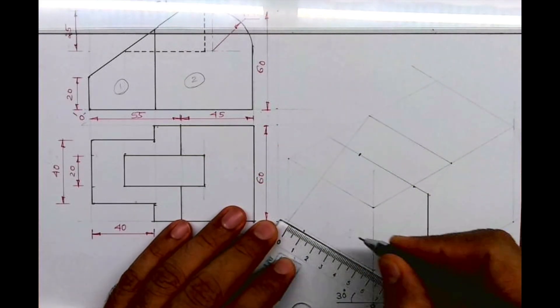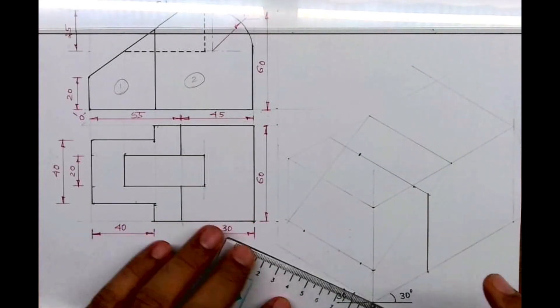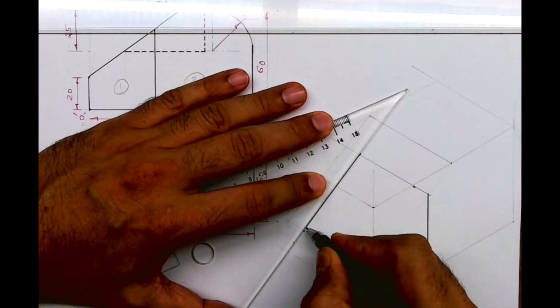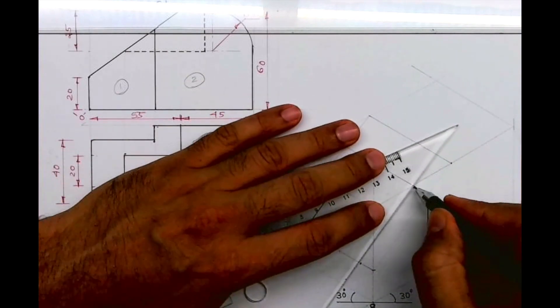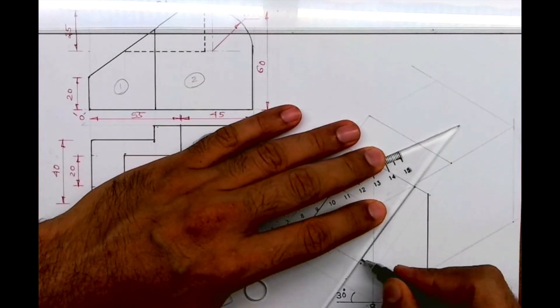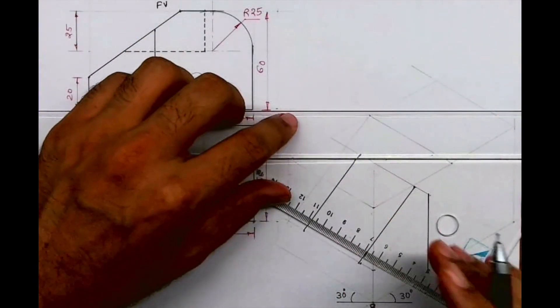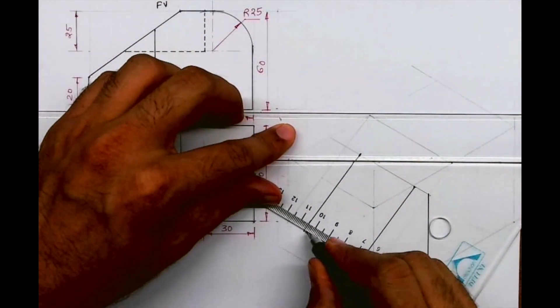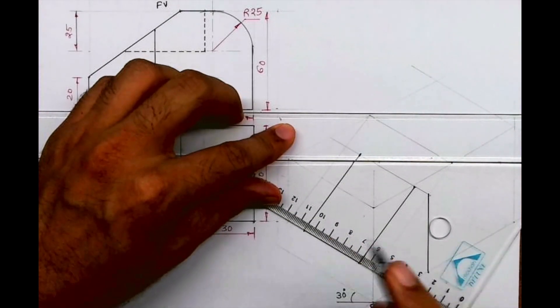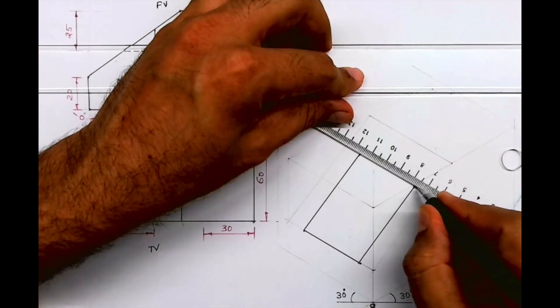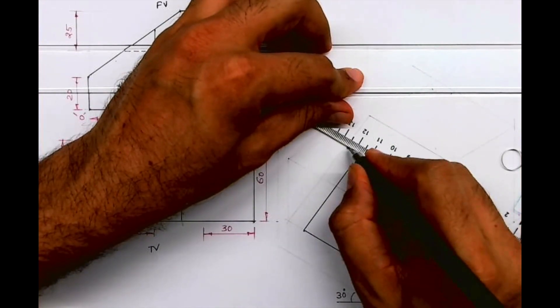See here also 10, 40, 10. Then what I'll do is join this, and I will join this, and I will join this. This will be dark, this is dark.